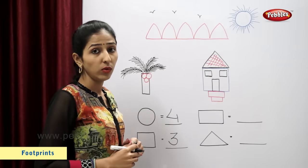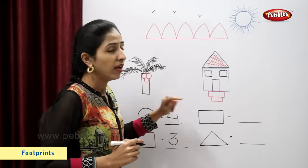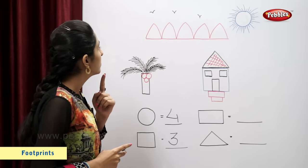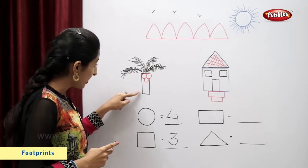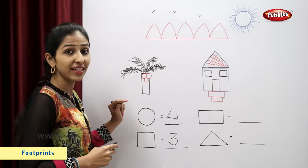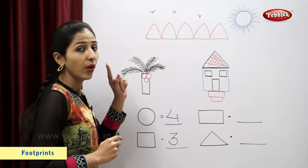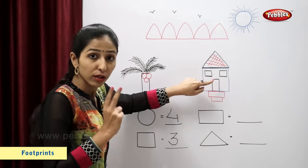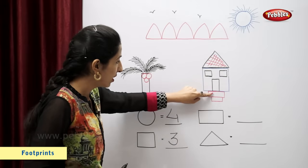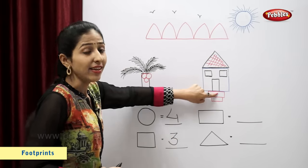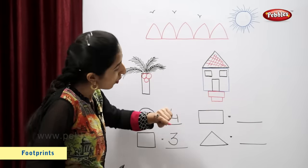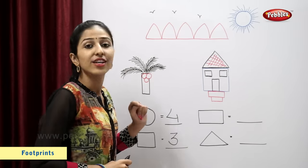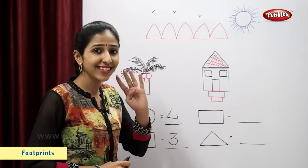Now let's look for rectangles. This is a rectangle. So one, two, three, four. So there are total four rectangles.